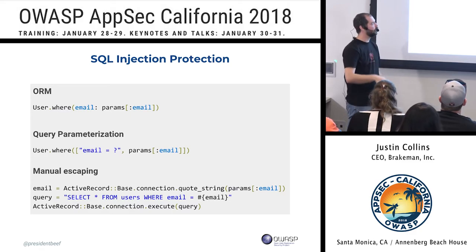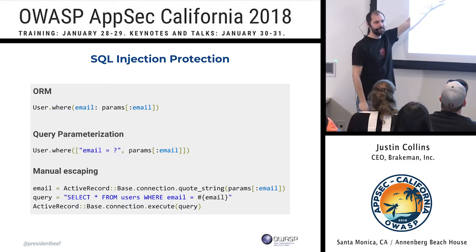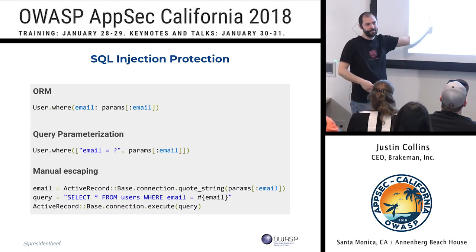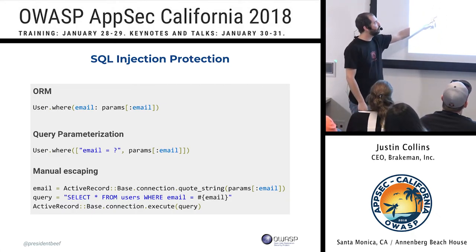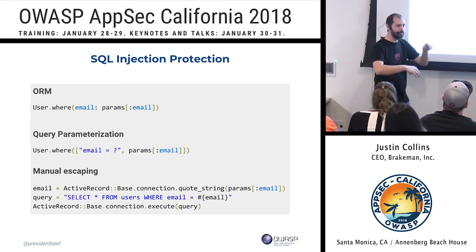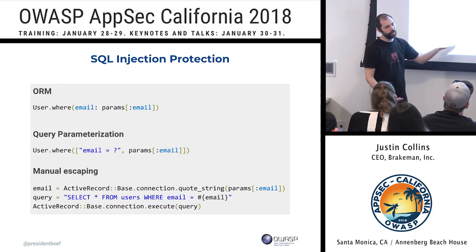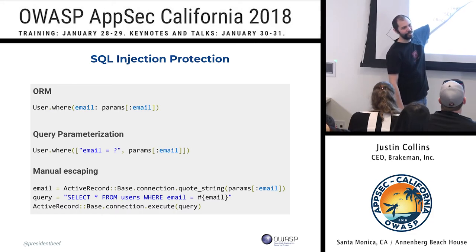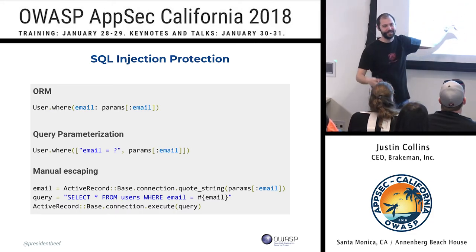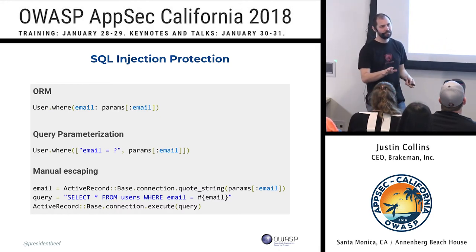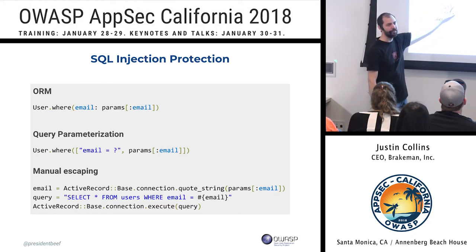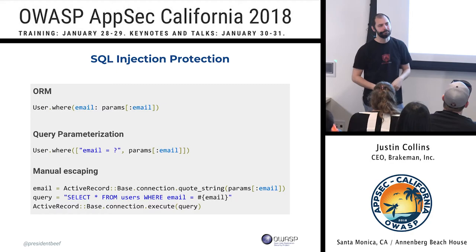We only get query parameterization for database queries — we don't usually get it for templates or other places. And what happens is people get into 'query parameterization mode' and then want to do something like a dynamic column name, but most query parameterization won't properly parameterize a column name or database name. So you still end up with people building dynamic strings and also using query parameterization in the same line of code. That's why maybe we need something else.